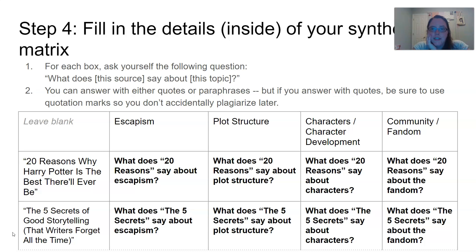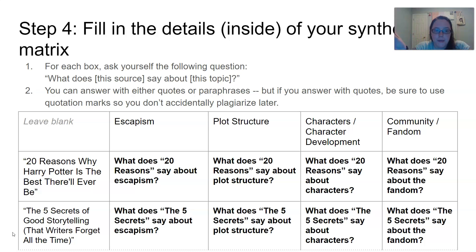Then what you want to do is fill in the details inside of your synthesis matrix. I did not do this assignment in the way that you guys would, but I asked questions. If you look at row two, column two — under the topic of escapism, next to the source titled '20 Reasons Why Harry Potter Is the Best There Will Ever Be' — the question I would answer in this box is: what does this source say about escapism? You can summarize, paraphrase, or quote it. My suggestion is that if you do provide quotes, make sure you put quotation marks around them, because otherwise you might end up plagiarizing later if you don't remember it's a quote when you're working on your essay from your synthesis matrix.